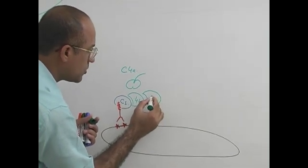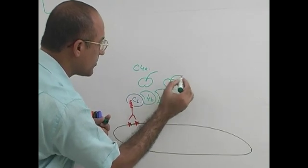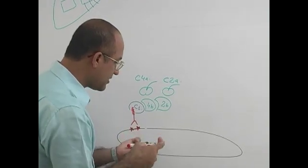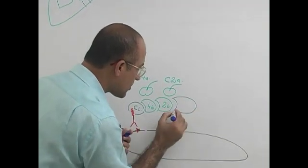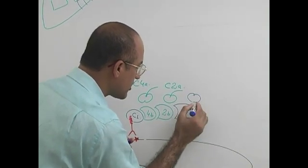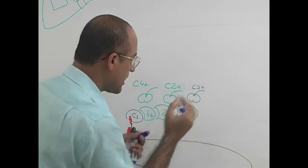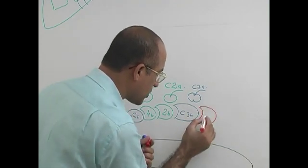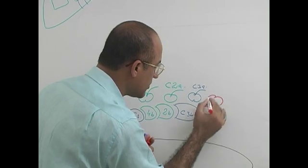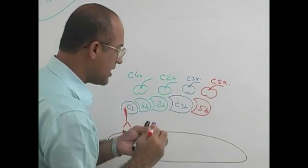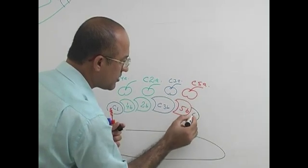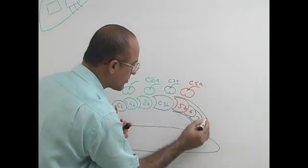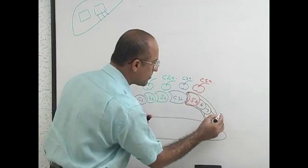Then C2 is cleaved — C2B stays and C2A goes away. Then C3, C4, C5, C7, C8, C9 follow in the cascade, ultimately forming the membrane attack complex.